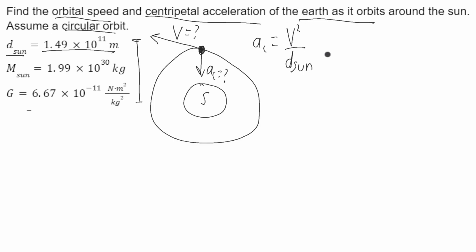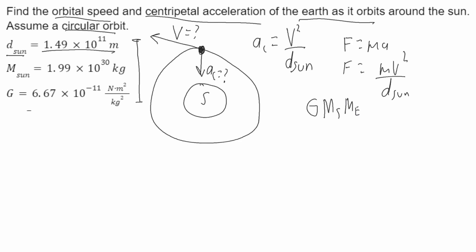Now we need to find velocity. F is equal to ma. We can plug that acceleration in: f is equal to mv squared over d of the sun. This force is going to be the gravitational force, because it's the only force acting on the Earth. So gravitational force is G times the mass of the sun times the mass of the Earth, over the distance between the sun and Earth squared. This equals the mass of the Earth — the object that's traveling, from the uniform circular motion equation — times velocity squared over d of the sun.